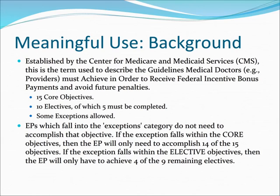There are 15 Core Objectives and 10 Electives, of which 5 must be completed. Some exceptions are allowed. EPs which fall into the Exceptions category do not need to accomplish that objective. If the exception falls within the Core Objectives, the EP will only need to accomplish 14 of the 15 Objectives. If the exception falls within the Elective Objectives, the EP will only have to achieve 4 of the 9 remaining Electives.